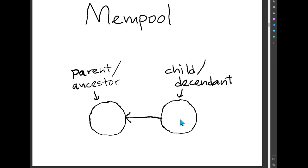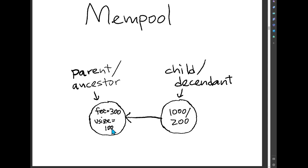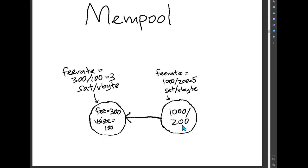Going back to the simple picture again — just two transactions in the mempool, a parent and a child. One of the things that's going to be really important is the fees, the size, and actually the fee rates. In this example, the parent transaction has a fee of 300 satoshis and a virtual size of 100 bytes. The child has a fee of 100 and size of 200. We'll show it as fee over size. The parent's fee rate is 300/100 = 3 sats per vbyte. The child's fee rate is 100/200 = 0.5 sats per vbyte. Wait — actually 1000/200 = 5 sats per vbyte.